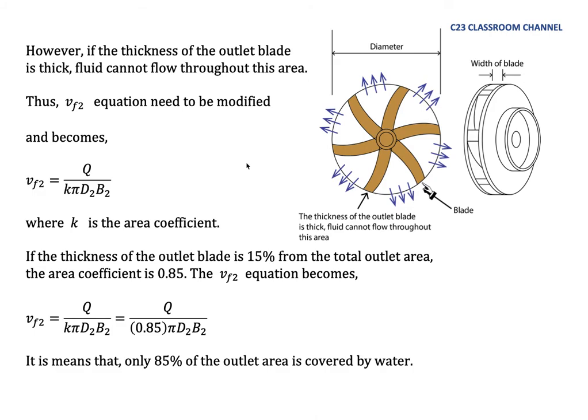What happens if our blade has thickness? As you could see here, if the blade is thick like this, it means that if we calculate the diameter here, πD will not reflect the area that water flows out because water did not flow at this area. Somehow we must deduct the area of 2πr with the area of the thickness of the blade.